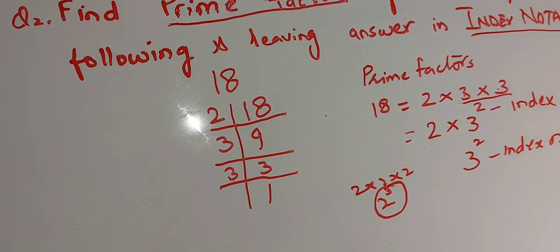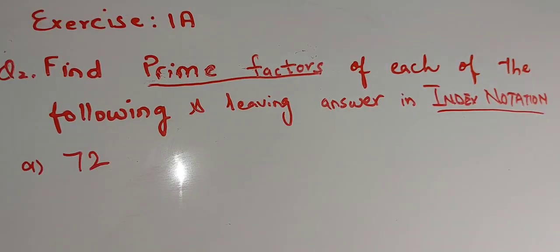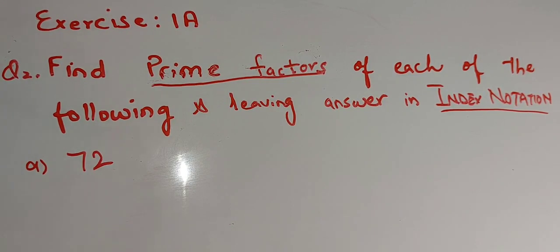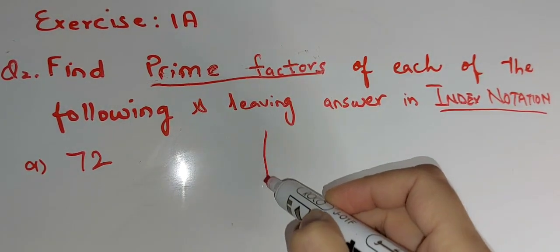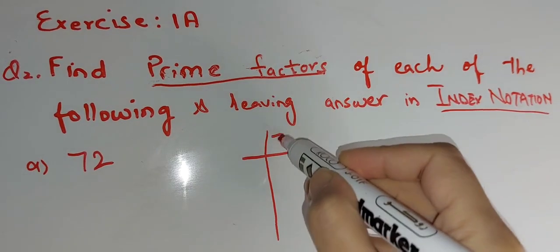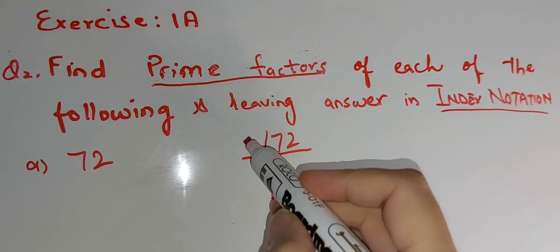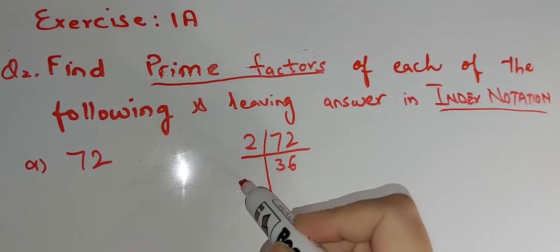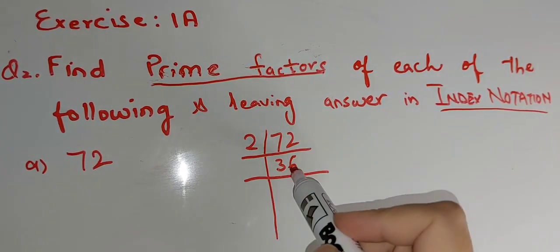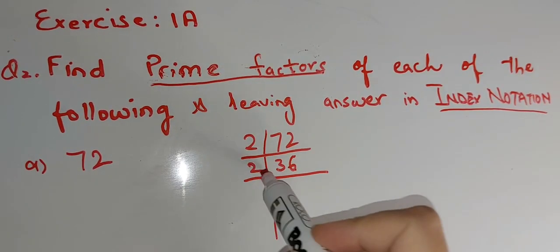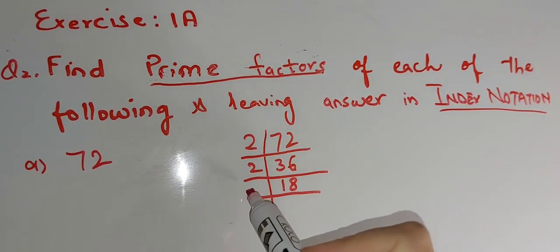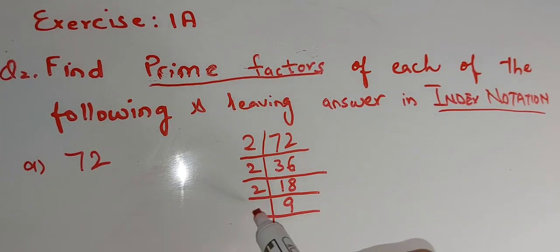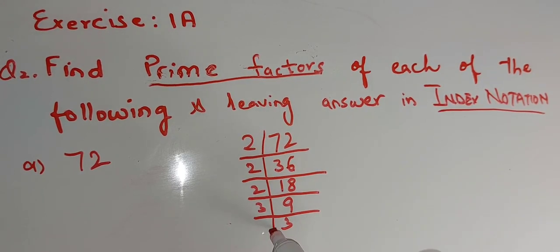Now start question number 2, part A. Part A is 72. First we make the prime factors of 72. 72 is divisible by 2 — 2 times 36 is 72. Again divisible by 2 — 2 times 18. Then 2 nines are 18. Then 3 threes are 9, because 9 is not divisible by 2. And 3 ones are 3.